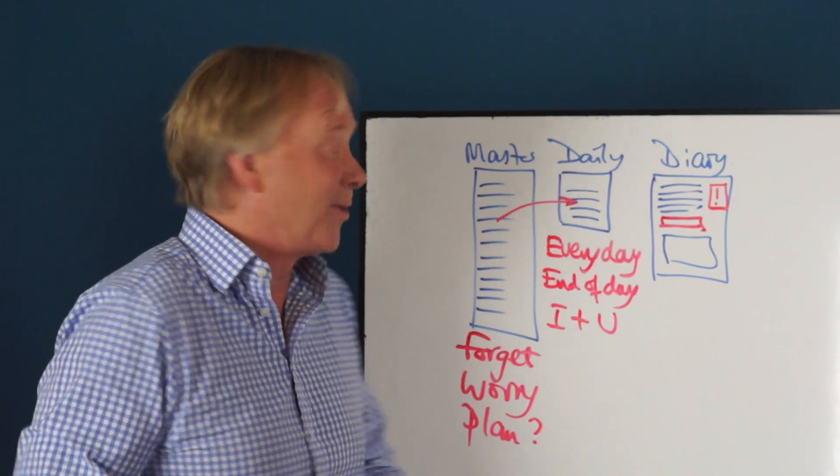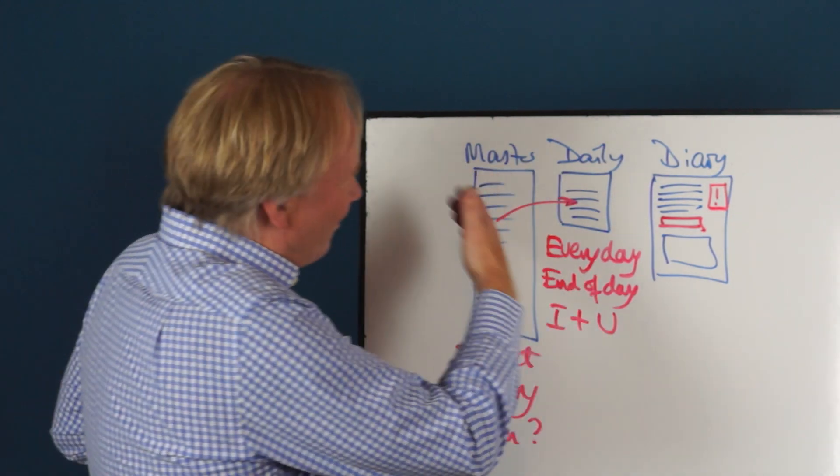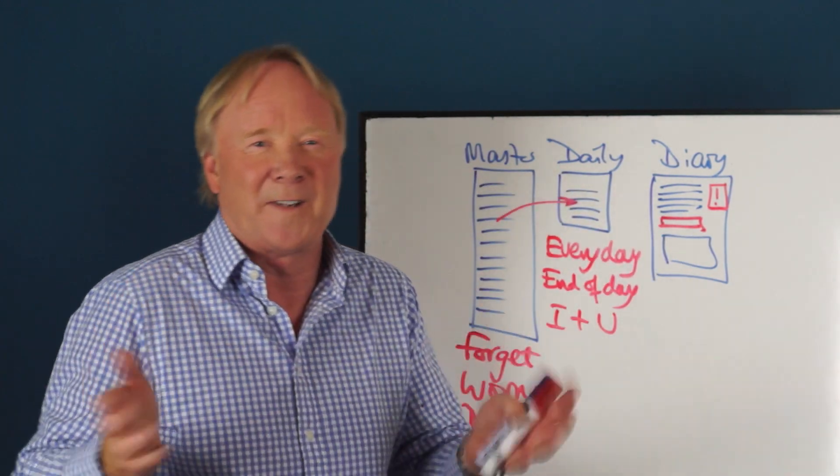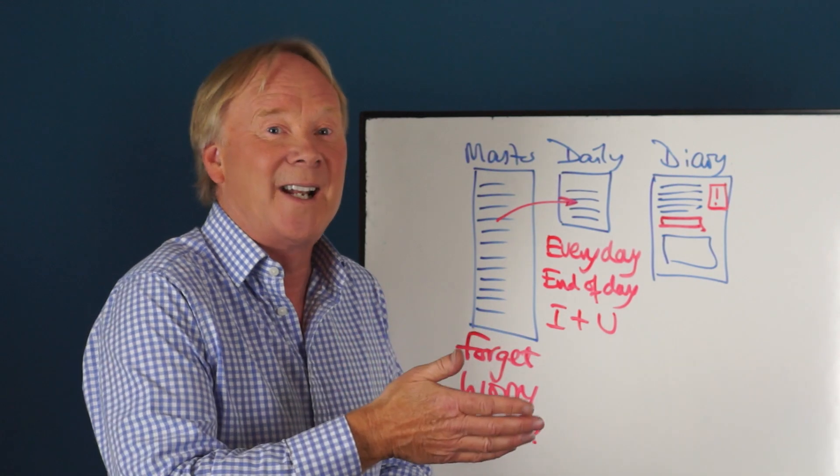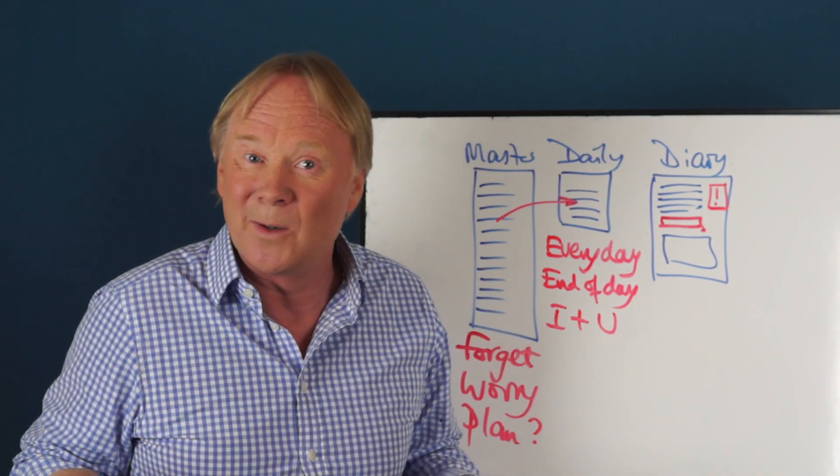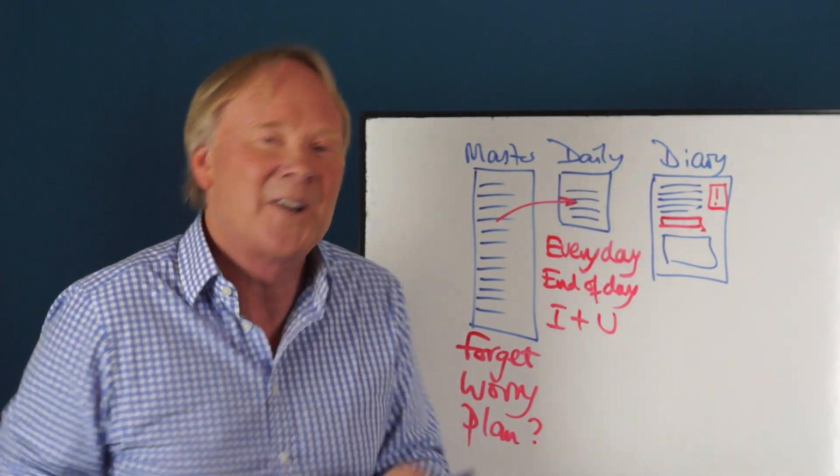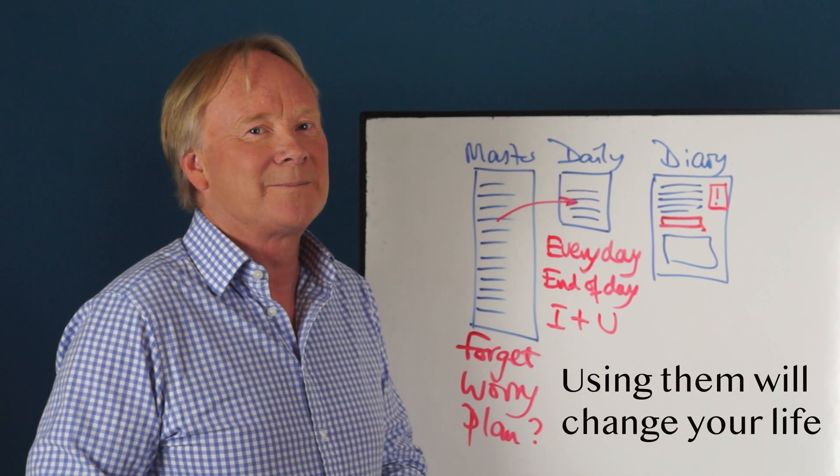So these are the three building blocks of efficiency: master list, daily list, and diary. And you can see that they're all quick and easy to do, and they will give you control. And you'll get more done, and all with lower stress.